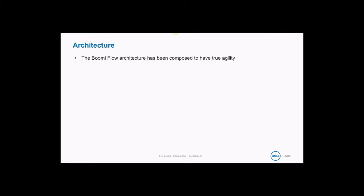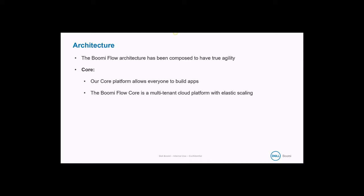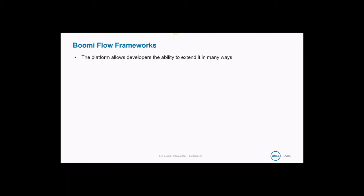The Boomi Flow architecture has been composed to have true agility. Our core platform allows everyone to build apps. The Boomi platform is a multi-tenant cloud platform with elastic scaling. This core is configured using drag-and-drop tooling but can also be configured using metadata APIs. The platform allows developers the ability to extend it in many ways. Like all things in enterprise IT, it can get complicated. As a result, we have open-sourced our frameworks to give developers complete access to ensure project success.